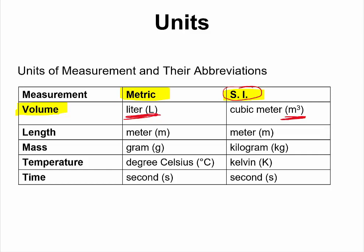Length has a unit of meter under both the metric and SI systems. Mass has a metric unit of gram and an SI unit of kilogram.